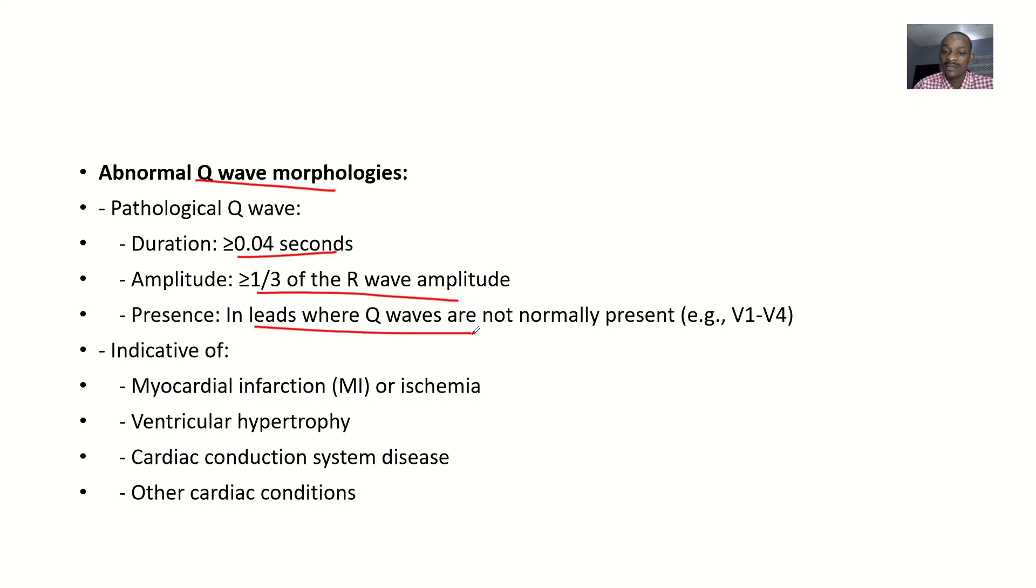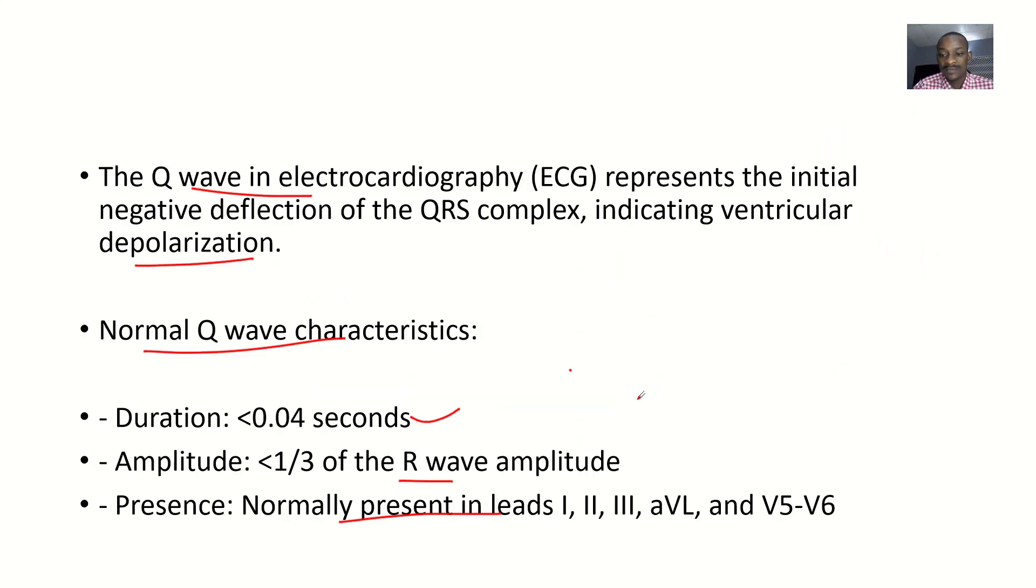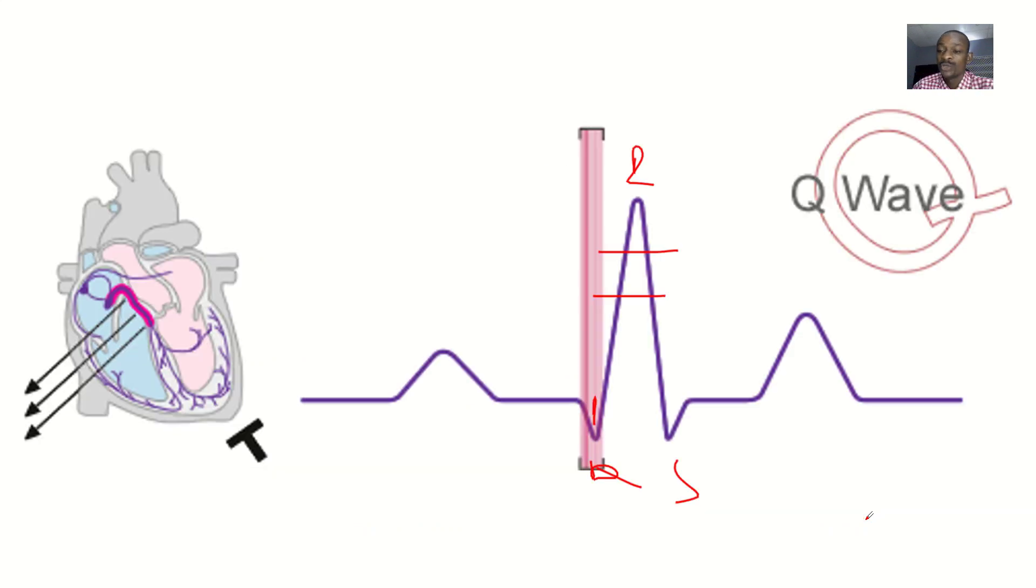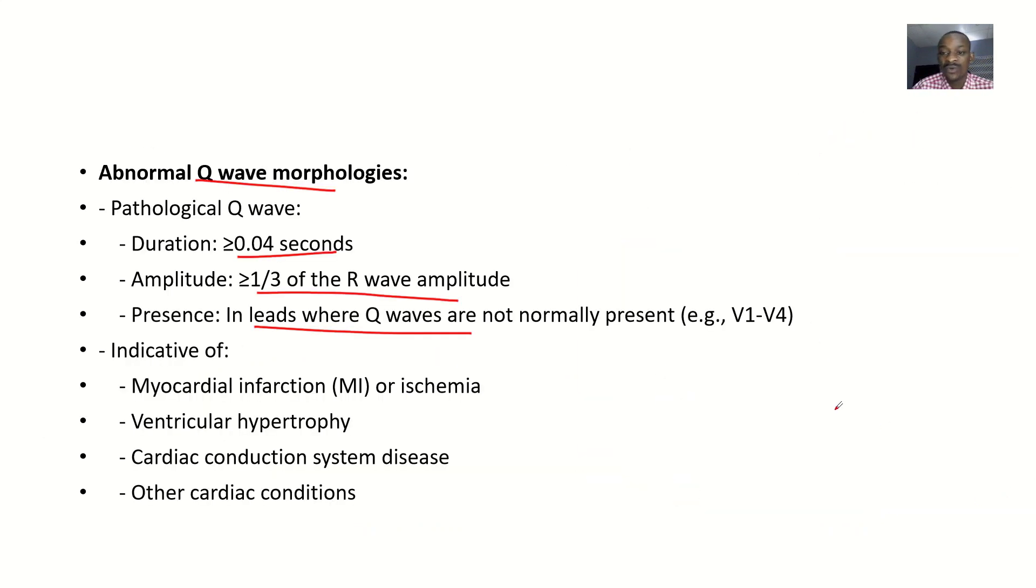Present in leads where Q wave is normally not present. We listed all the leads here, but there was no V1 to V4. If you're now seeing Q wave in V1 to V4, there's a problem.